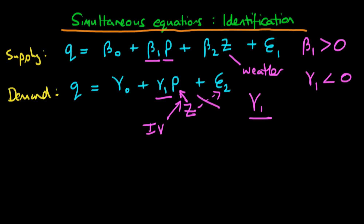Can we do the same thing in the first equation? Could we use Z as an instrument for price in the first equation? We can't, because Z is already contained within our first equation. So we can't use Z as an instrument for P there. We would actually need some further exogenous variable contained within the demand equation which wasn't contained within the supply equation. So in this situation, we can estimate gamma 1 but we cannot estimate beta 1 — we're not able to estimate beta 1 if we have data on Q, P, and Z.